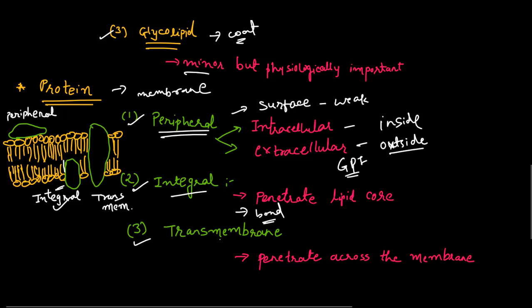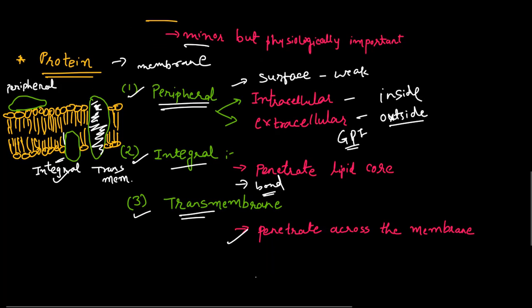The third type is transmembrane proteins. These proteins are present across the membrane. Certain examples of transmembrane proteins are ion channels, transporters, and receptors. These are all transmembrane proteins found throughout this membrane, across the membrane.